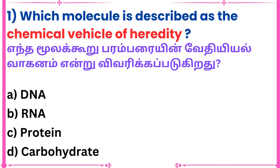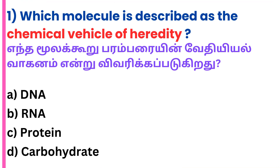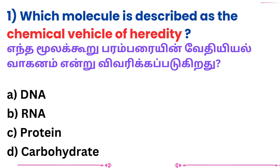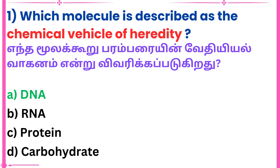First question: Which molecule is described as the chemical vehicle of heredity? (Tamil: DNA-in moolakoorou parambarayin vedhiyal vahganam mendru vuverikkap padyarudu?) Answer: DNA.